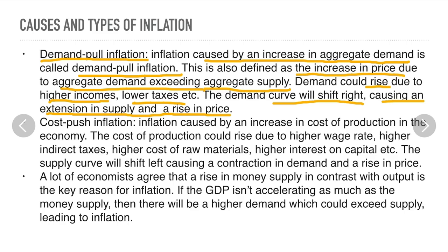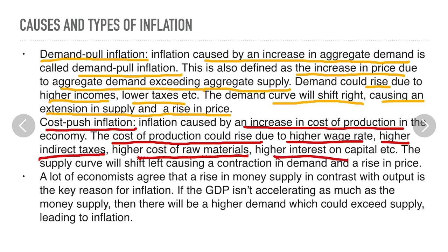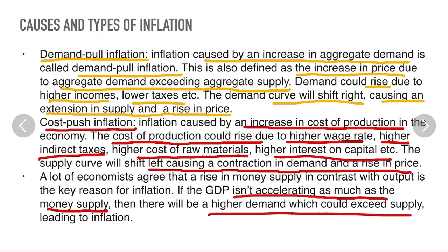Cost-push inflation is caused by an increase in the cost of production in the economy. The cost of production could rise due to high wage rates, higher indirect taxes, high cost of raw materials, or high interest on capital. The supply curve will shift to the left, causing a contraction in demand and a rise in price. Many economists agree that a rise in money supply in contrast with output is the key reason for inflation. If GDP isn't growing as fast as the money supply, there will be high demand which could exceed supply, leading to inflation.